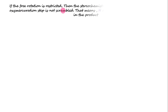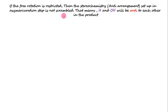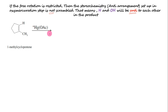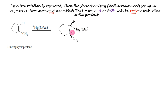If free rotation is restricted, then H and OH will be anti to each other in the product, meaning the stereochemistry of Hg set up in the oxymercuration step is not scrambled. For example, consider 1-methylcyclopentene. The first step is mercuration to form the mercurinium ion. Notice that the methyl and hydrogen are shown above the plane, because the three-membered mercurinium ring is shown forming down the plane. This can also be shown the other way, where methyl and hydrogen are down the plane and the three-membered ring is above the plane. Thus mercuric acetate can approach the planar alkene from above or from below.